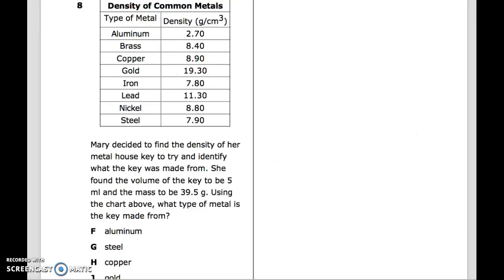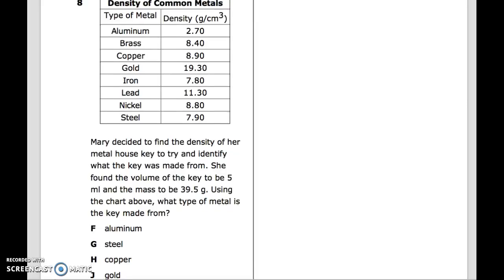Number 8: Density of Common Metals. Type of Metal, Density: Aluminum, Brass, Copper, Gold, Iron, Lead, Nickel, Steel. Mary decided to find the density of her metal house key to try and identify what the key was made from. She found the volume of the key to be 5 milliliters and the mass to be 39.5 grams. Using the chart above, what type of metal is the key made from? F. Aluminum, G. Steel, H. Copper, J. Gold.